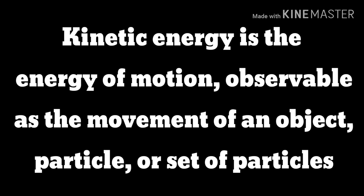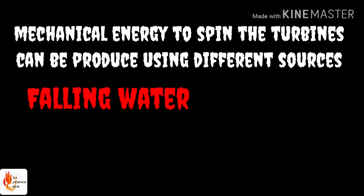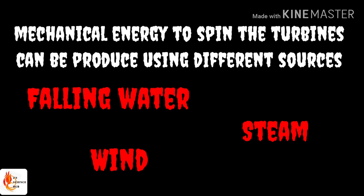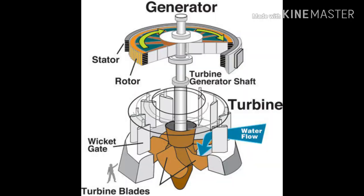Electricity is produced by using kinetic energy, which is a kind of mechanical energy. This kinetic energy is used to rotate a turbine connected to a generator. The mechanical energy to spin the turbine can come from a variety of sources, including falling water, wind, or steam from heat generated by nuclear reactions, geothermal energy, or by burning fossil fuels.